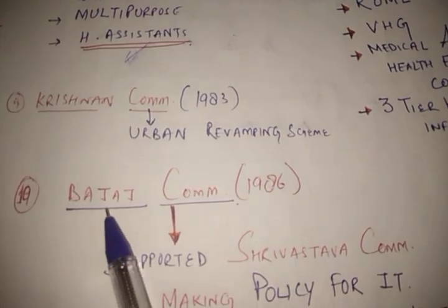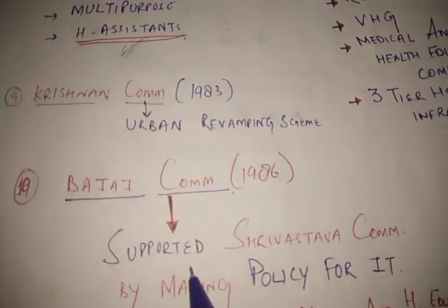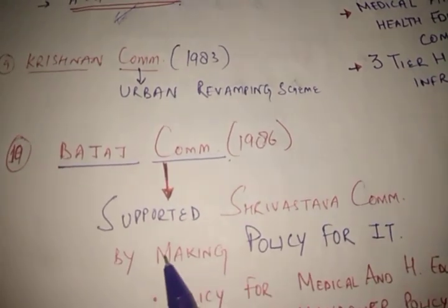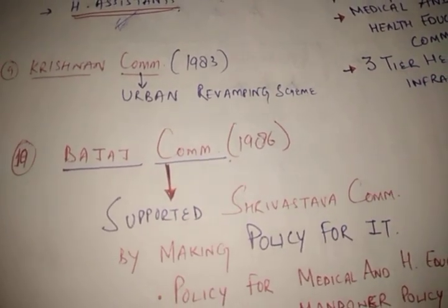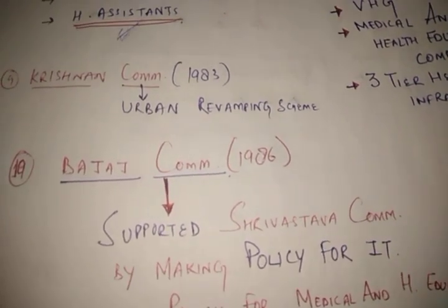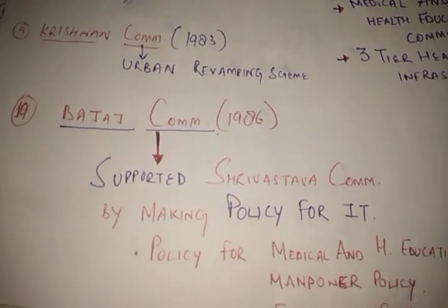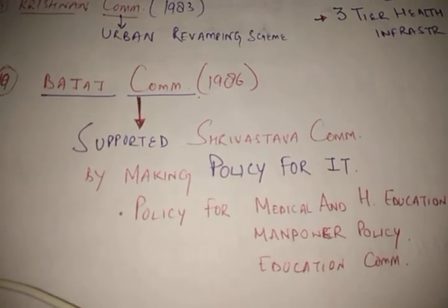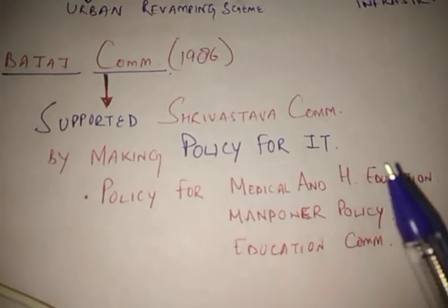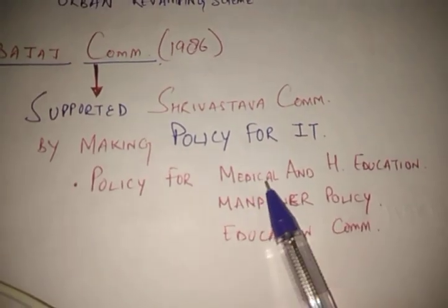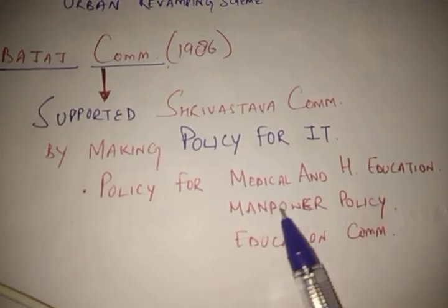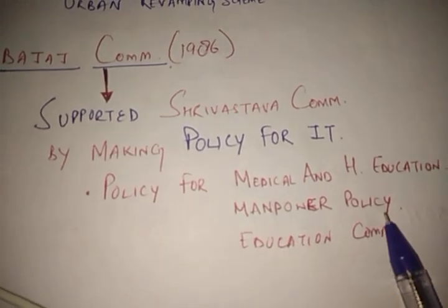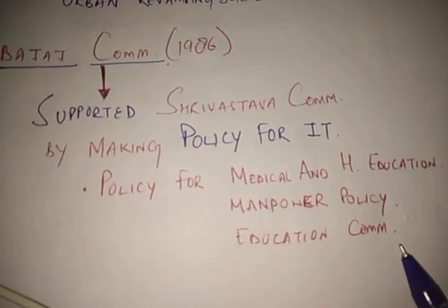The Bajaj Committee was the last committee, and it supported the Srivastava Committee by making policy for it. The policies created by the Bajaj Committee include policy for medical and health education, manpower policy, and the education commission.